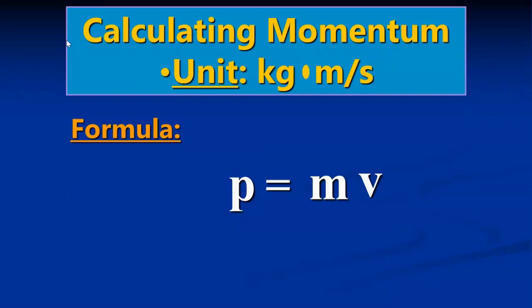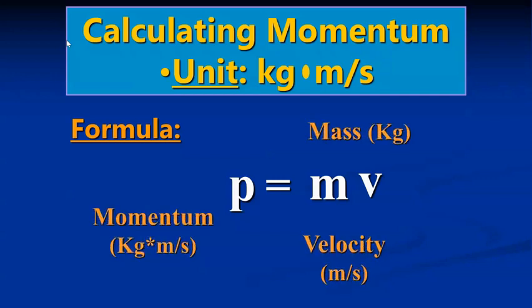The equation that you see on the screen is the equation for momentum, it's just mass times velocity, and the letter that we use for momentum in this equation is P, because obviously M was already taken with mass, so we have to use a different letter.